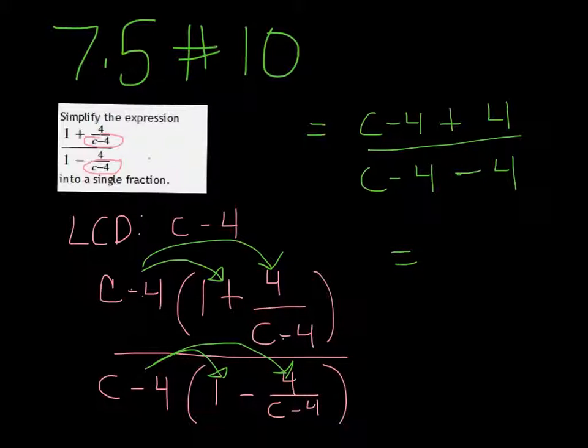If we combine like terms, or simplify that, we get c over c minus 8.